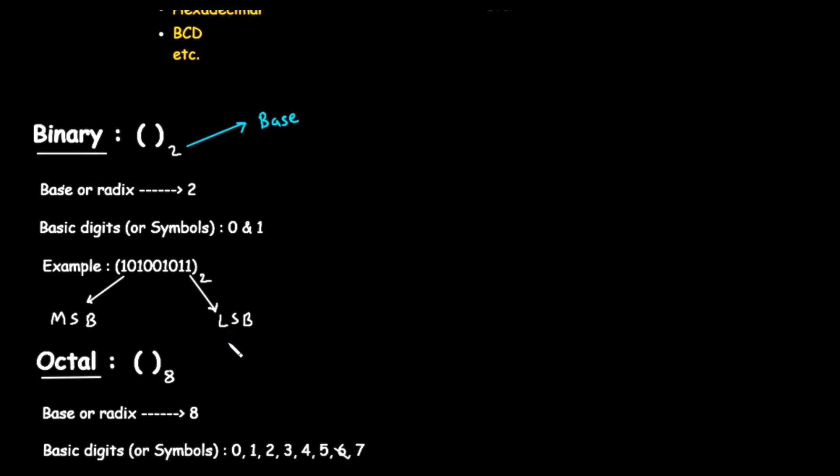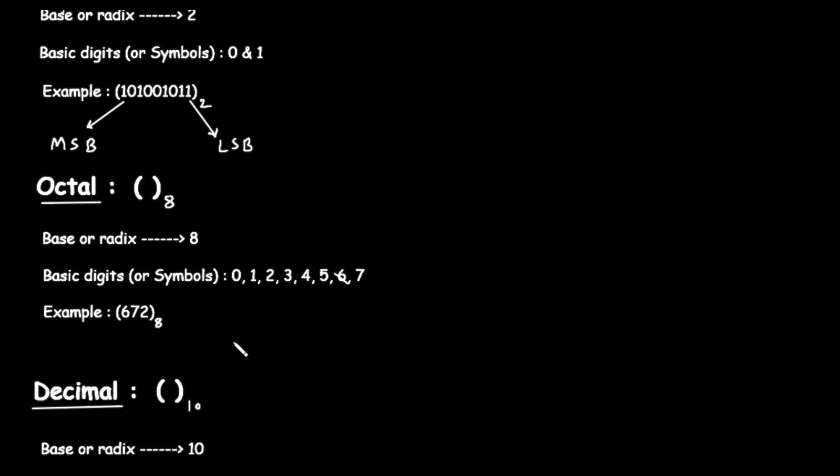Next up, we have the octal number system. The notation for an octal number is a number in parentheses followed by a small subscript 8. This tells us we are working in base 8. The word octal comes from the root octo, meaning 8. So, the base or radix of the octal system is 8. This means it uses 8 unique symbols to represent all its numbers.